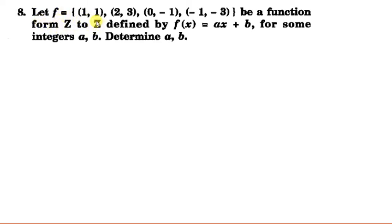Given by these three ordered pairs: (1,1), (2,3), (0,-1), (-1,-3), and is defined by this relationship f(x) = ax + b for some integers a and b. We have to determine a, b.